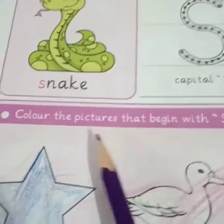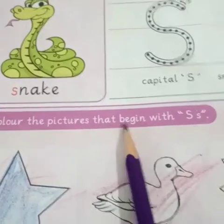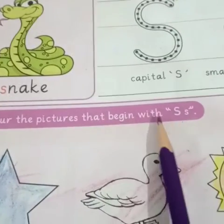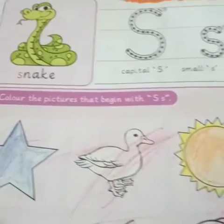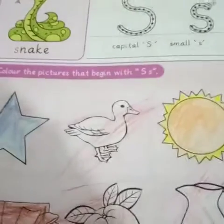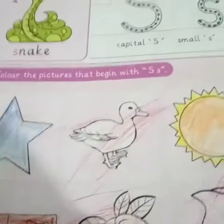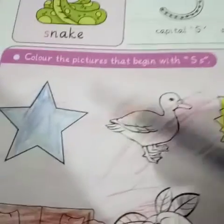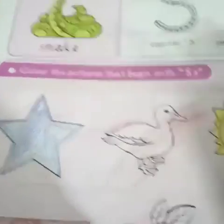Look at the second heading: 'Color the pictures that begin with S.' This means we will fill colors in those pictures which have the sound of letter S as a beginning sound. Like S — star. S — star.